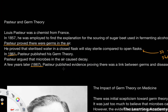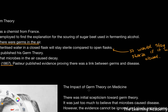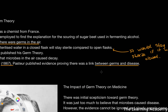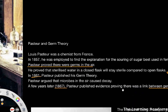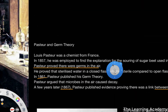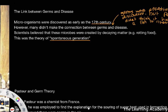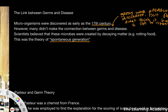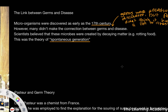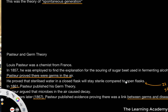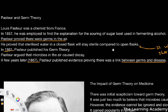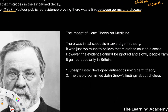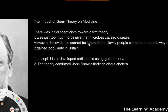A few years later — six years later — Pasteur published evidence proving that there was a link between germs and disease. Not only did Pasteur debunk the theory of spontaneous generation and get the correct answer, he also proved that the link was there between germs and disease. It was really hugely influential and had a huge impact on the theory of medicine.